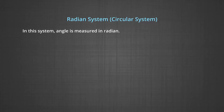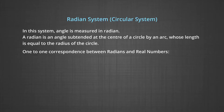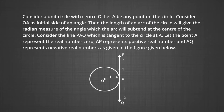Now, let us study the radian system which is also called the circular system. In this system angle is measured in radians. A radian is the angle subtended at the centre of a circle by an arc whose length is equal to the radius of the circle. We are going to develop a one-to-one correspondence between radians and real numbers. For this, consider a unit circle with the centre O. Let A be the point on the circle. Consider OA as the initial side of an angle; then the length of an arc of the circle will give the radian measure of the angle which the arc will subtend at the centre of the circle.